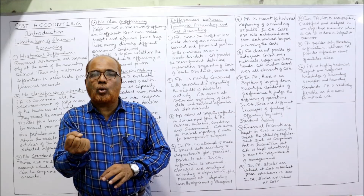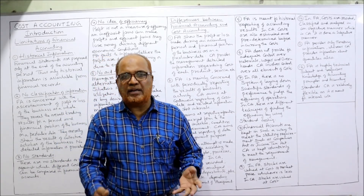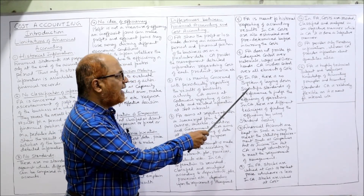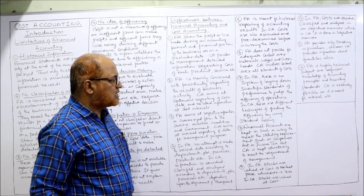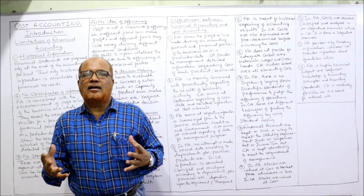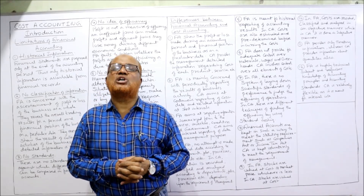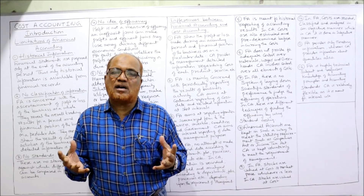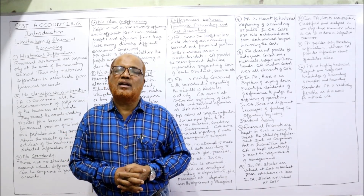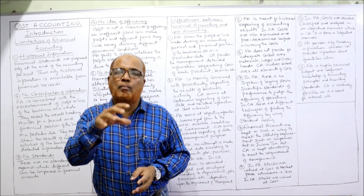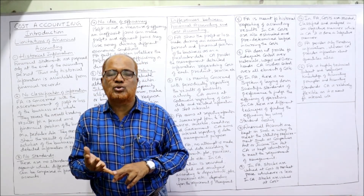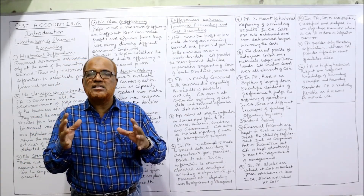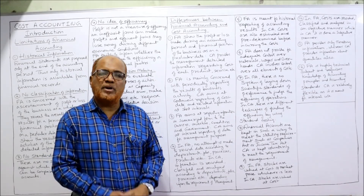In financial accounting there is no system of laying down systematic standards of performance to judge efficiency — no norm or standard exists to judge efficiency. Whereas in cost accounting, techniques like standard costing are applied to measure the efficiency of material used, the efficiency of labor, and the efficiency of overheads, providing a systematic and scientific method of measuring performance.